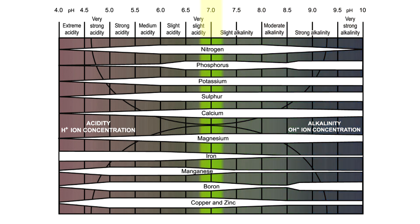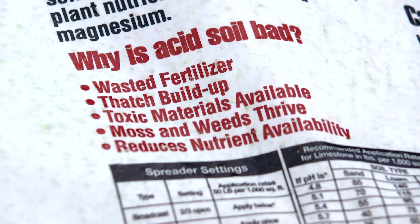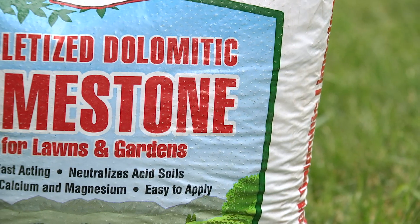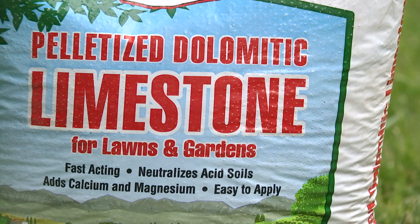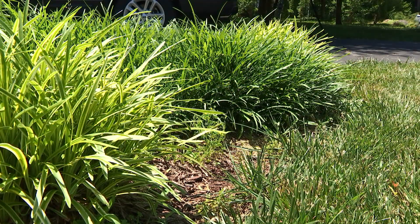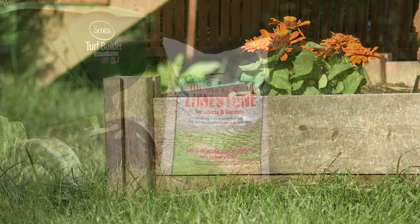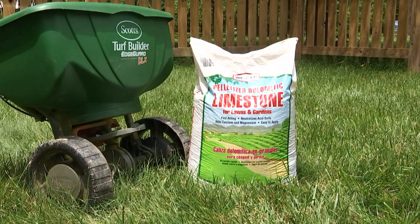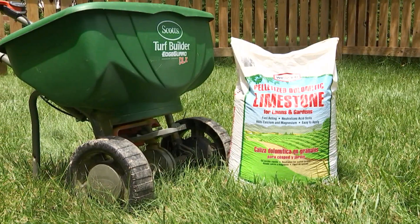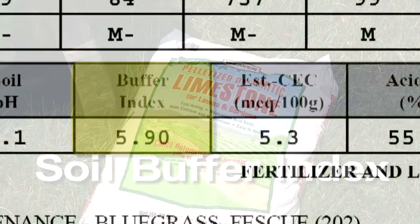A pH of 7.0 is considered neutral. Our local soils are naturally more acidic than is optimal for turf or some plants. We use lime to raise the pH of the soil to an acceptable level for the plant being grown. It's difficult to lower the pH accurately, so it's best to let nature take its course and lower the pH over time. Lime recommendations are not based on the soil pH directly, but on the soil buffer index, which measures how easily soil pH can be changed. The higher the buffer index, the less lime it takes to change the pH.